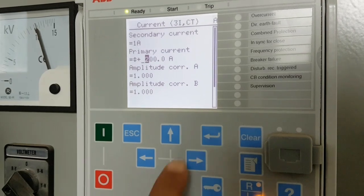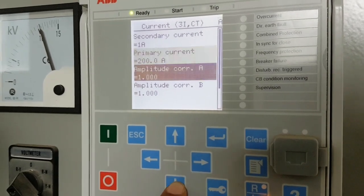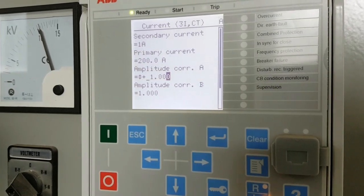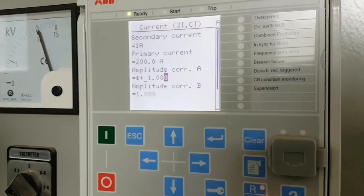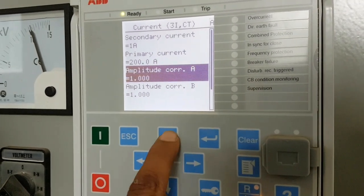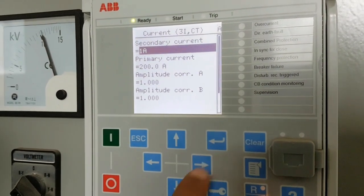You have to change the primary current by clicking the enter button. Editing will be enabled, and then we will change the primary current from 300 or whatever value you need.